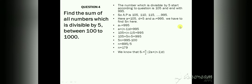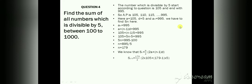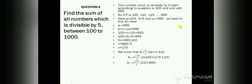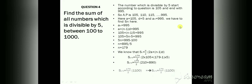Now we know n, so we use the formula: Sₙ = n/2 · (2a + (n−1)·d). Substituting all values: Sₙ = 179/2 · (2×105 + 178×5) = 179/2 · (210 + 890) = 179/2 · 1100.